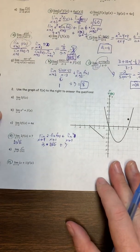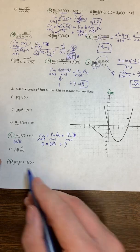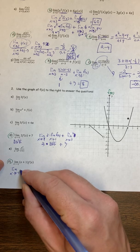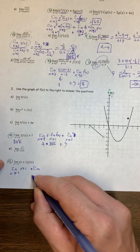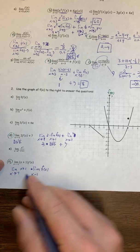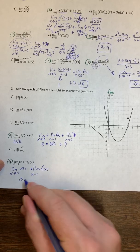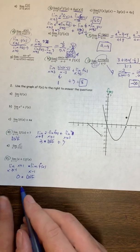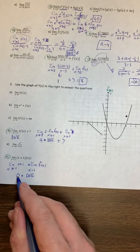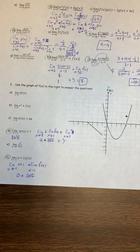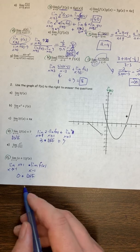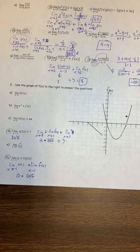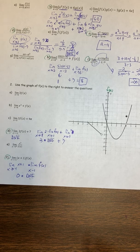Compare that to this next one: the limit as x goes to negative 1 of (x+1) times f(x). We have to be very careful about the properties we use. We split up the limit and get 0 times does-not-exist. This should give you pause. If we have 0 times something that does not exist, maybe it doesn't exist — but 0 times anything is 0. So we have these two rules coming into conflict. If we multiply a number times something that doesn't exist it shouldn't exist, but if we multiply anything times 0, it should be 0.